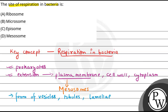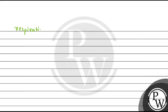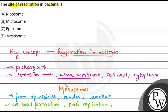If we talk about the functions of mesozoomes, then one of the most important functions is cell wall formation. It also helps in DNA replication and the division of two daughter cells. Furthermore, the other key functions are respiration and the secretion process. It also increases the surface area of the plasma membrane.